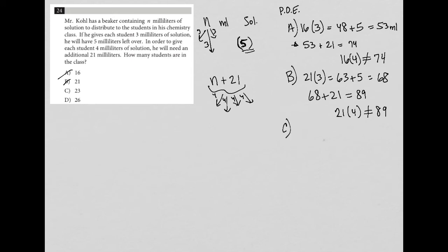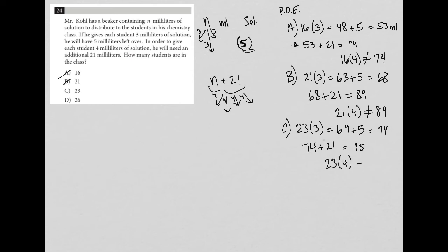Choice C — let's say we had 23 students. So 23 times three is 69, plus five gets us up to 74. But then those 74 — you would have to add 21 to that, which gets you to 95. And we'd have to say that 23 times four equals 95. That definitely is not true because 23 times four equals 92, not 95. So C is out.